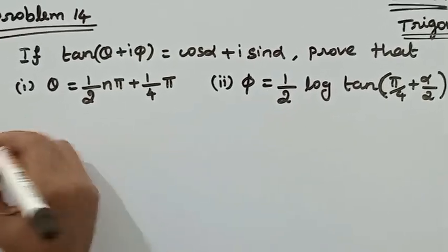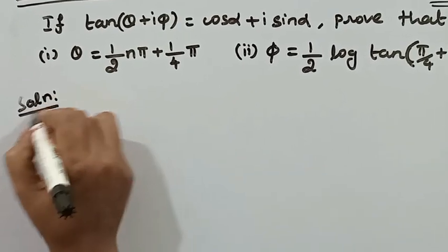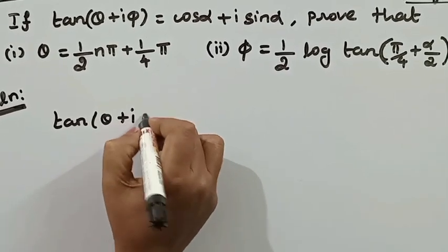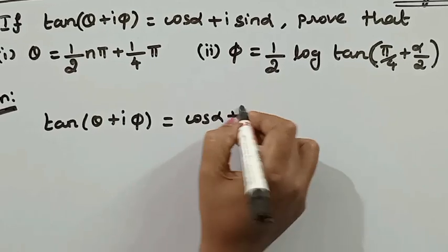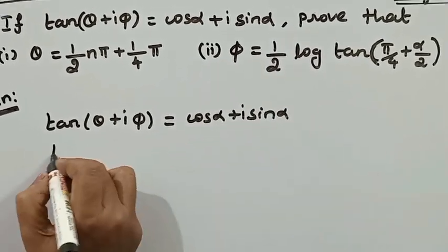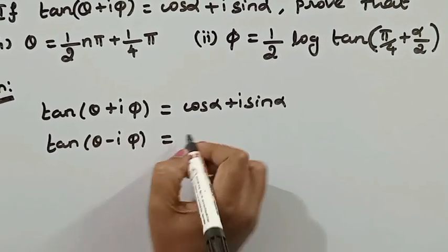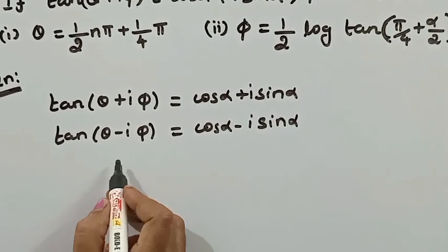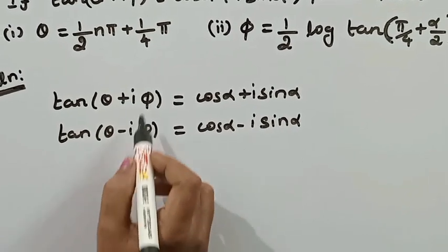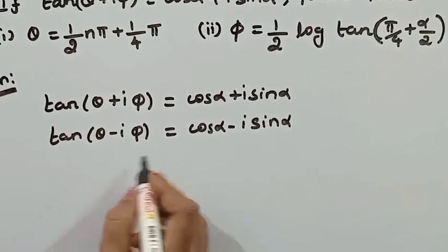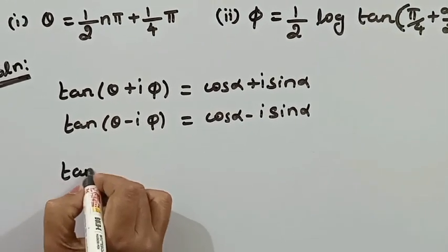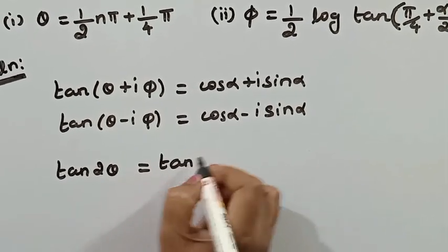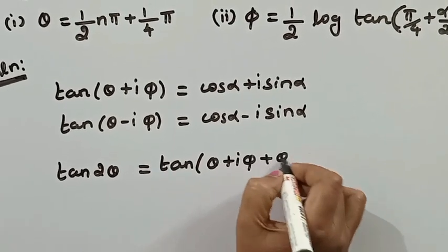Now we will prove the two options. The given condition is tan(θ + iφ) = cos α + i sin α. We also know tan(θ - iφ) = cos α - i sin α. If we add the two terms (θ + iφ) and (θ - iφ), we get 2θ, and we will calculate the value of tan(2θ).